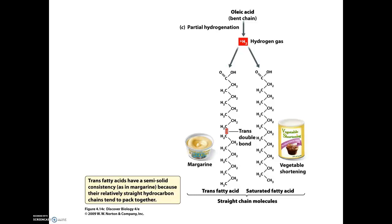It is also possible to take an unsaturated fat and fully bring it to saturated status. That's the case with vegetable shortening, or Crisco, which had been an unsaturated fat that, through the process of hydrogenation or chemical processing, has been made fully saturated.